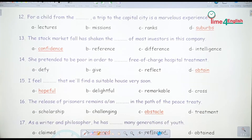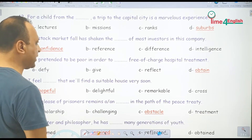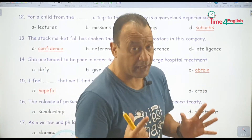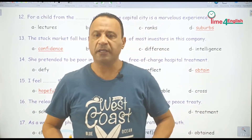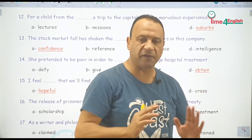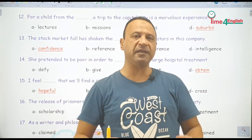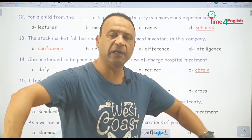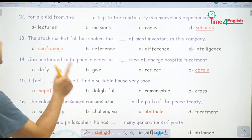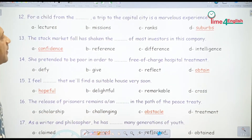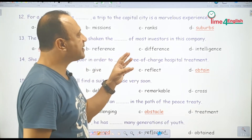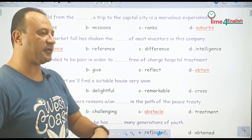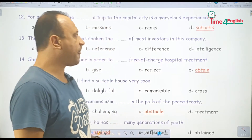For a child from the suburbs — إحنا عارفين كلمة suburbs بمعنى الضواحي، ضواحي المدينة، يعني المناطق اللي على حدود المدينة مش في وسط البلد. A trip to the capital city is a marvelous experience — يعني تجربة رائعة بالنسبة له.